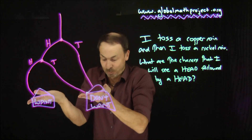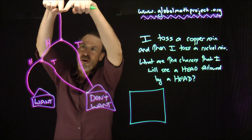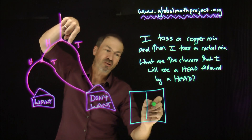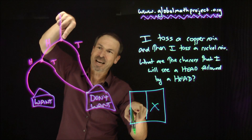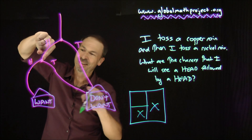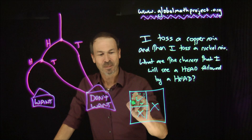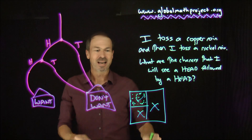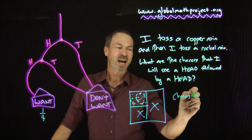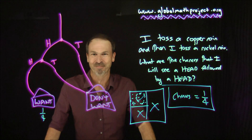Now I can answer it by drawing the area model. People first split into two - half go to the Don't Want House immediately. The remaining half split into two again, where half go to Don't Want and half go to the Want House. I can see that one quarter of the people end up in the Want House. The chances of ending up there are one quarter - we've just solved a probability problem.